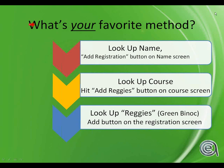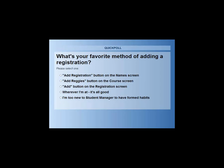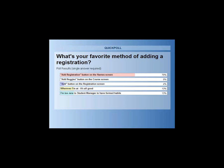Poll results: 70% work from the main screen. There really isn't a bad way to do that. Add Registration from the course screen - not many people pick this. One of the reasons for that is if you had several people to register for a class, you can go into Add/Edit Registrations and just keep hitting Add, then it will look up a name, add that name, look up another name, add that name.